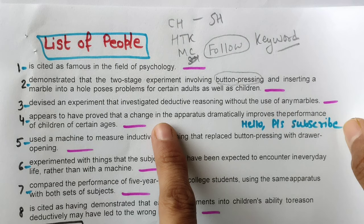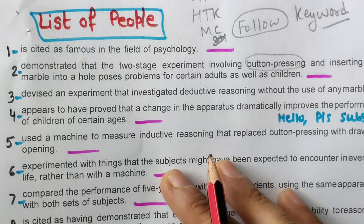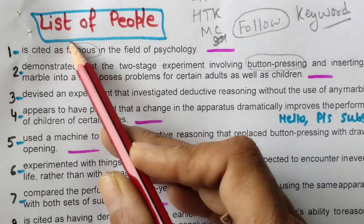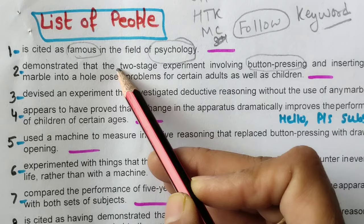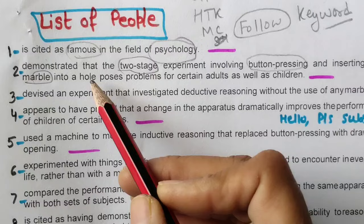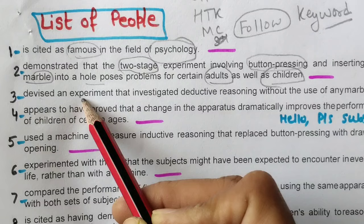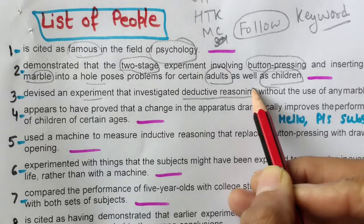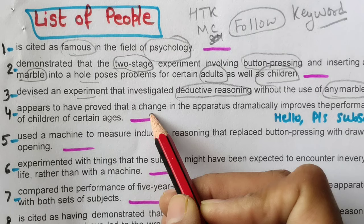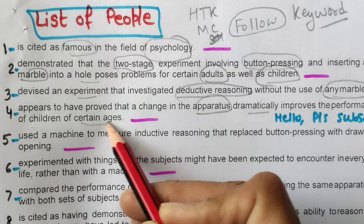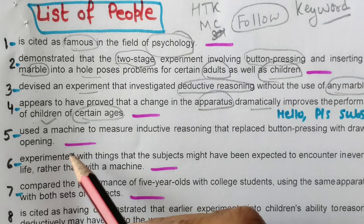Let's read all the options first and identify keywords. Question 1: 'is cited as famous in the field of psychology' — keyword: famous, psychology. Question 2: 'demonstrated that a two-stage experiment involving button pressing and inserting a marble into a hole poses problems for certain adults as well as children.' Question 3: 'devised an experiment that investigated deductive reasoning without the use of any marbles.'